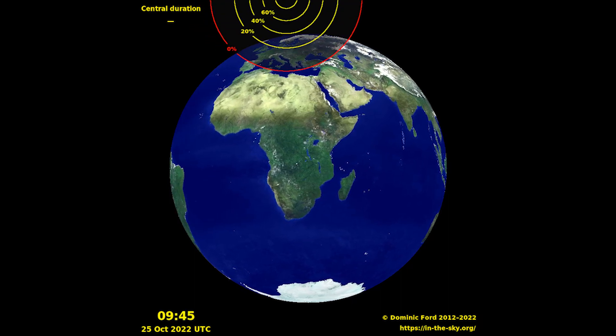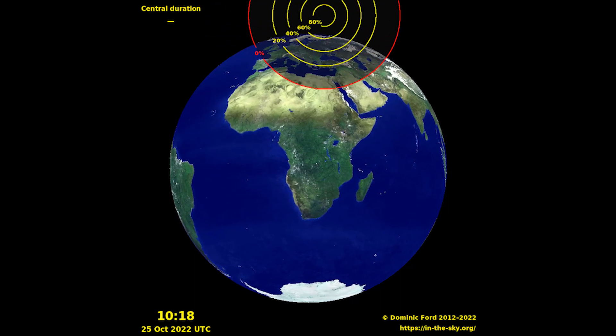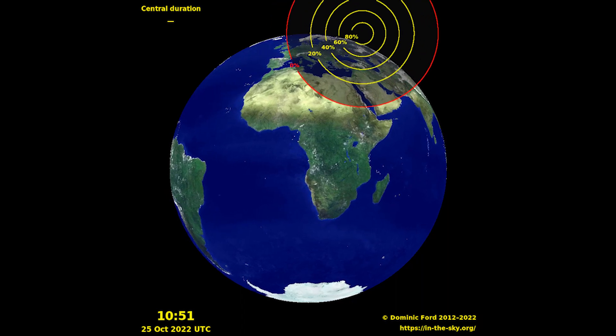In this eclipse, the umbra passes above the north pole with only the edge of the moon's shadow falling onto the Earth.